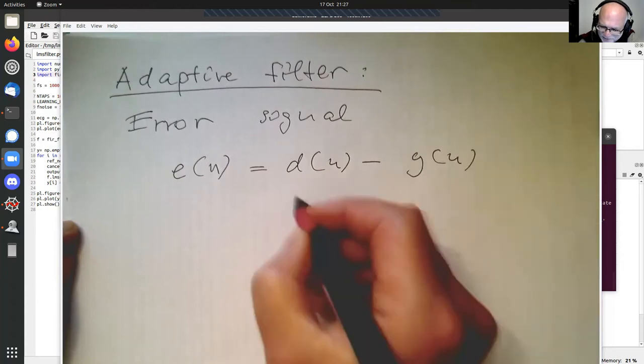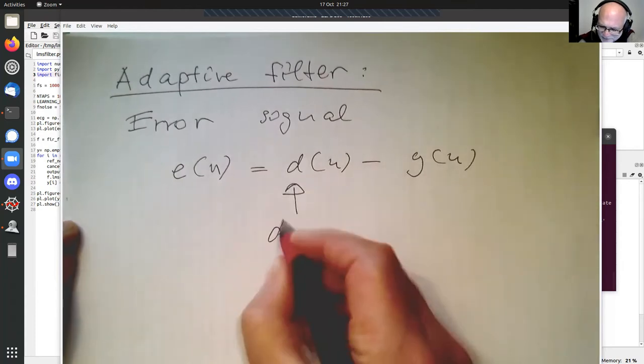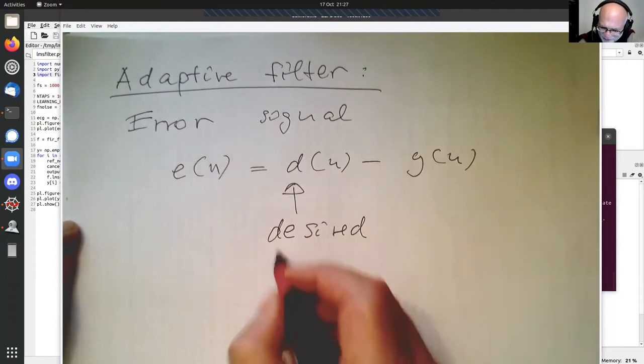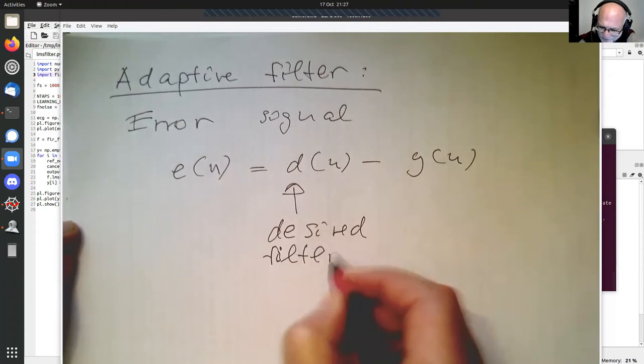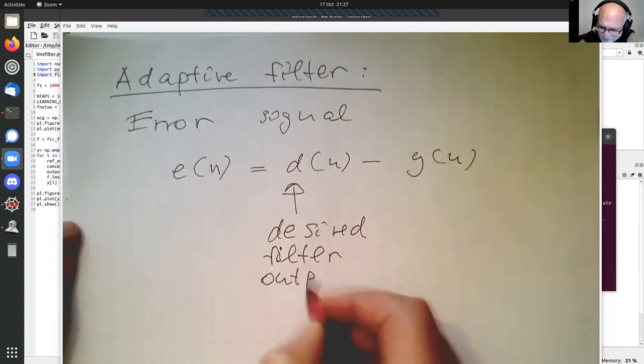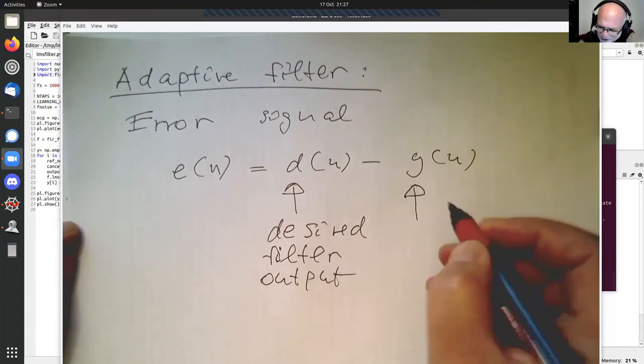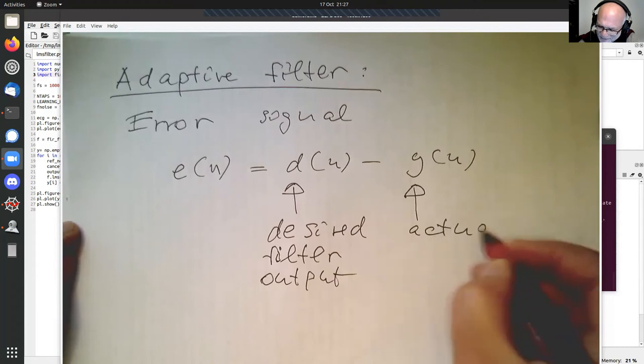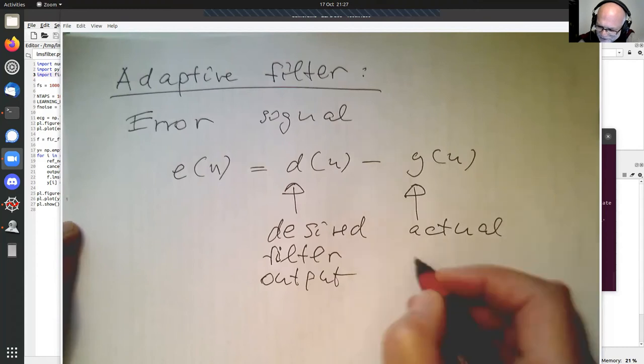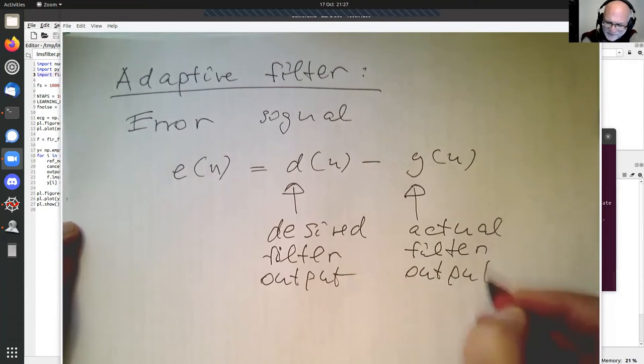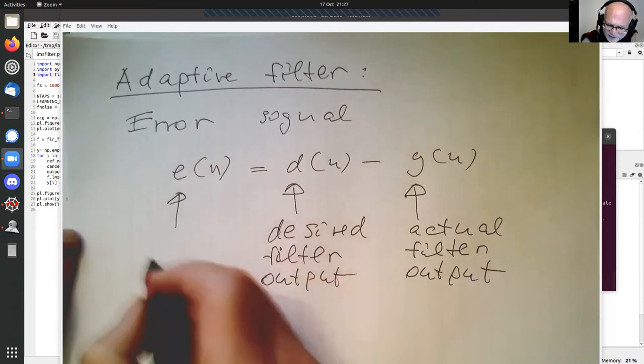So we have a desired filter output, and here we have the actual output. And then we are defining an error signal here.